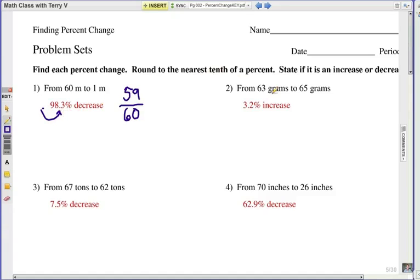Number 2, you're going to go from 63 to 65, so you subtract to get 2 grams. That's an increase of 2 grams out of the original 63. It's always the first amount. When you divide that out, you get a decimal, move your decimal over, 3.2% increase.